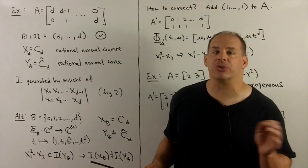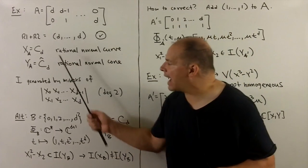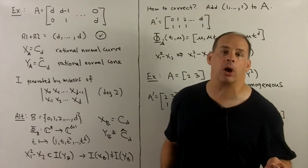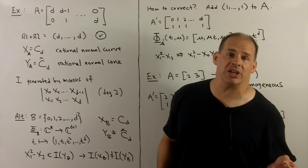We also have that their ideals are the same. In fact, they're given by just taking the minors of this 2 by d matrix, and we've seen that before. So the generators are homogeneous of degree 2.